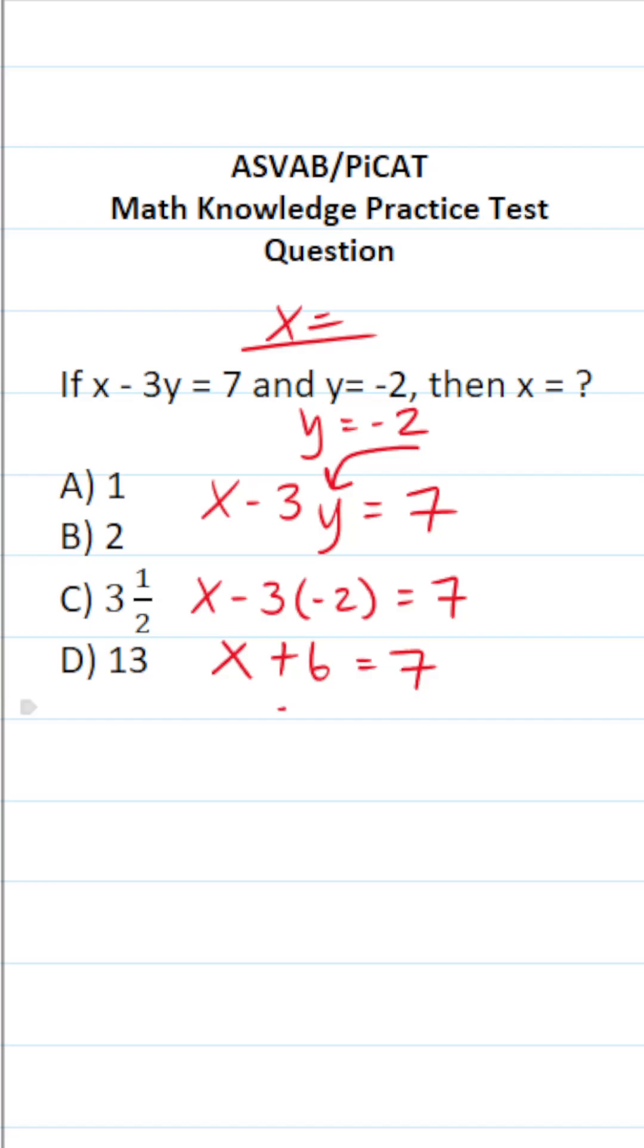And finally, to get x by itself, we're going to subtract 6 from both sides. This says x equals 7 minus 6, which is 1. All right, so the answer to this one is A.